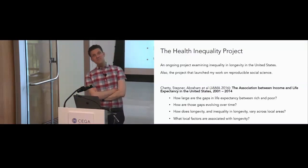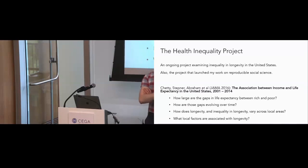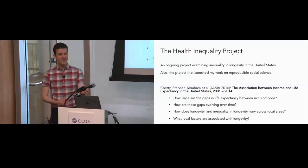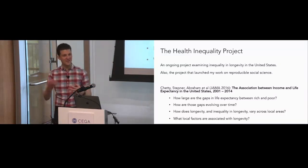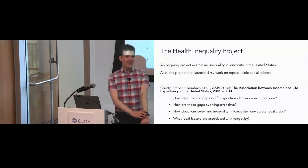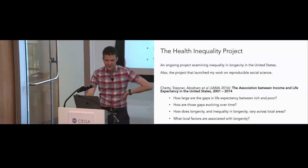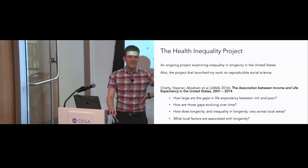In the first third of this presentation, I'll tell you what we found about the association between income and life expectancy. In the second two-thirds, I'll draw the connection between this work and reproducible social science — explaining the mechanisms behind why you can go on our website, go on GitHub, download the code, download a zip file, write three commands, and run the whole program from start to finish.